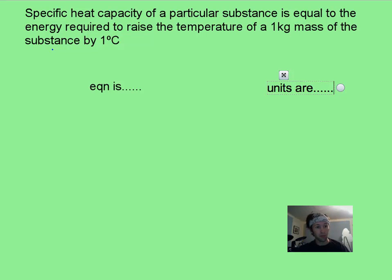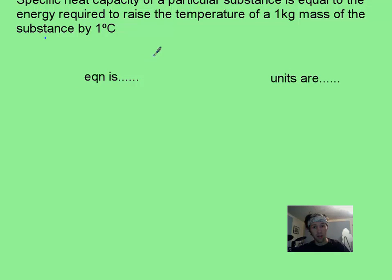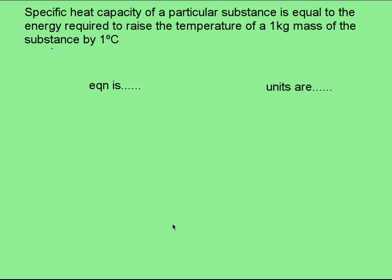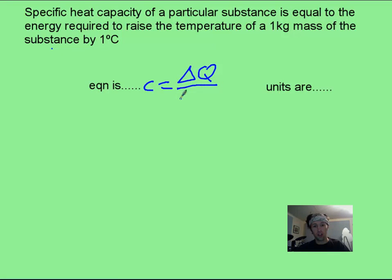Now, the equation is not too difficult. Small c is the change in energy divided by the mass and the change in temperature. Keep in mind, this is a lowercase c. Now, often you'll see this rearranged in maybe the more useful form as Q equals mc delta T.